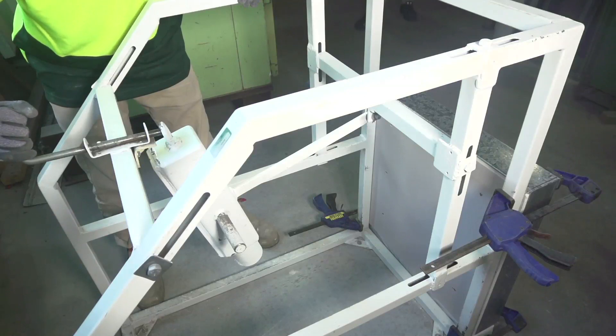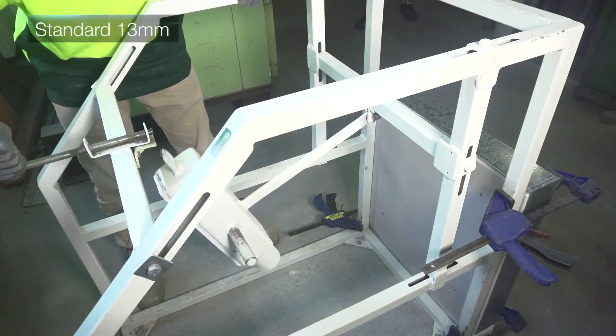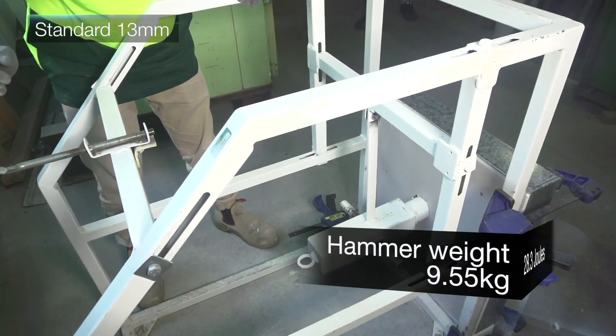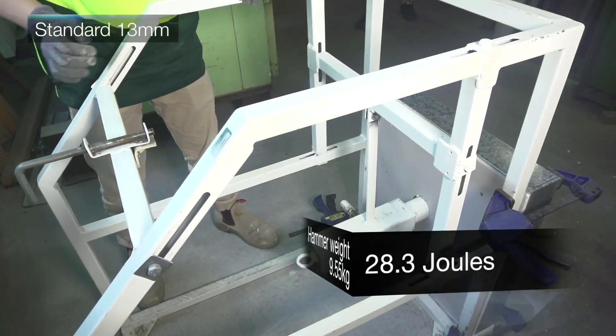The higher the measure, the better the performance. This demonstration of the rig shows the hammer penetrating a sample of standard 13mm plasterboard at the high impact energy of 28.3 joules.